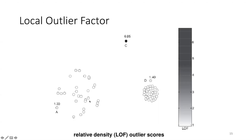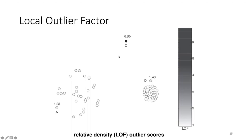Using the same dataset as before but with LOF, points A, D, and C are all considered outliers — whereas with KNN, only point C or perhaps point A would be flagged. LOF is a step ahead because it also accounts for the density of the surrounding area.